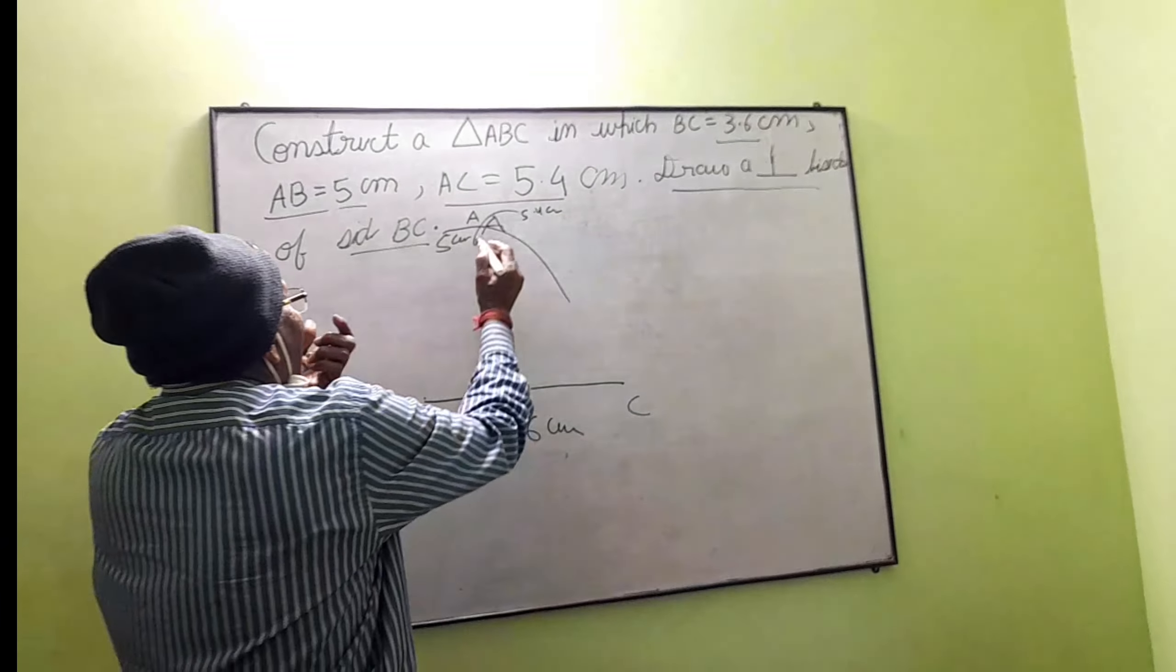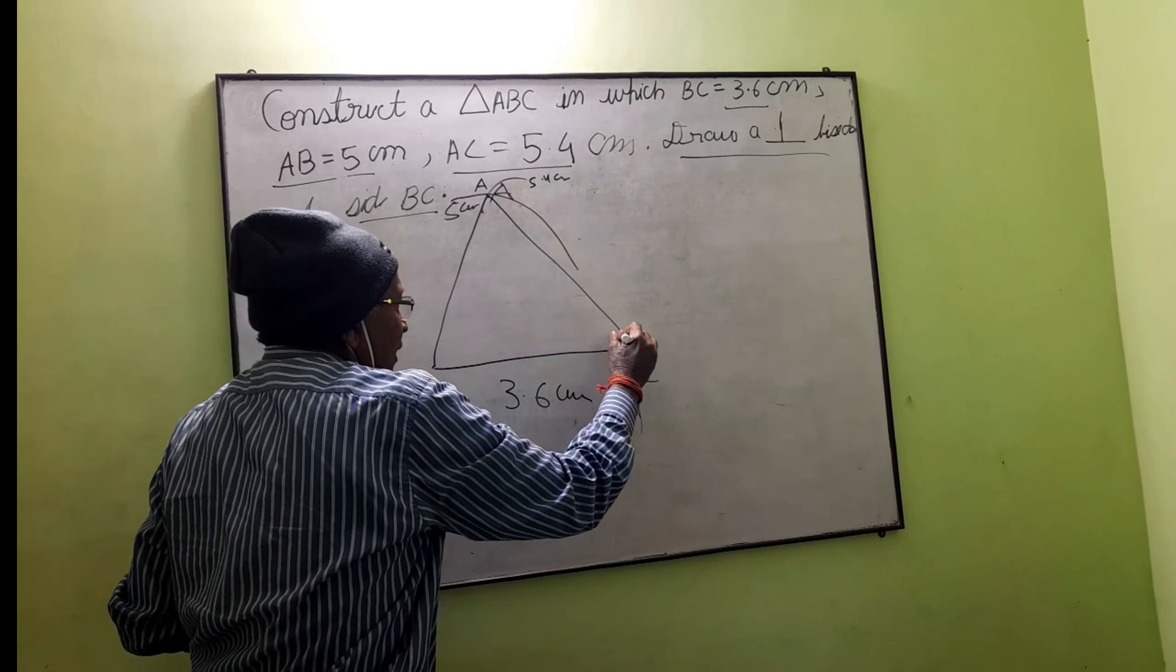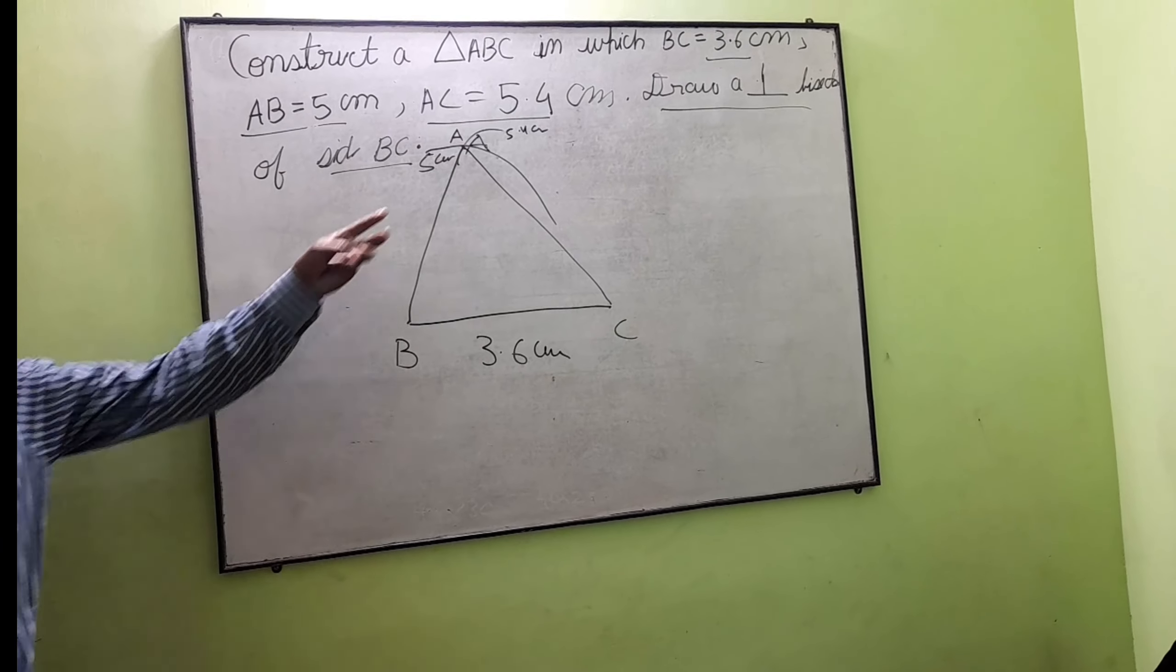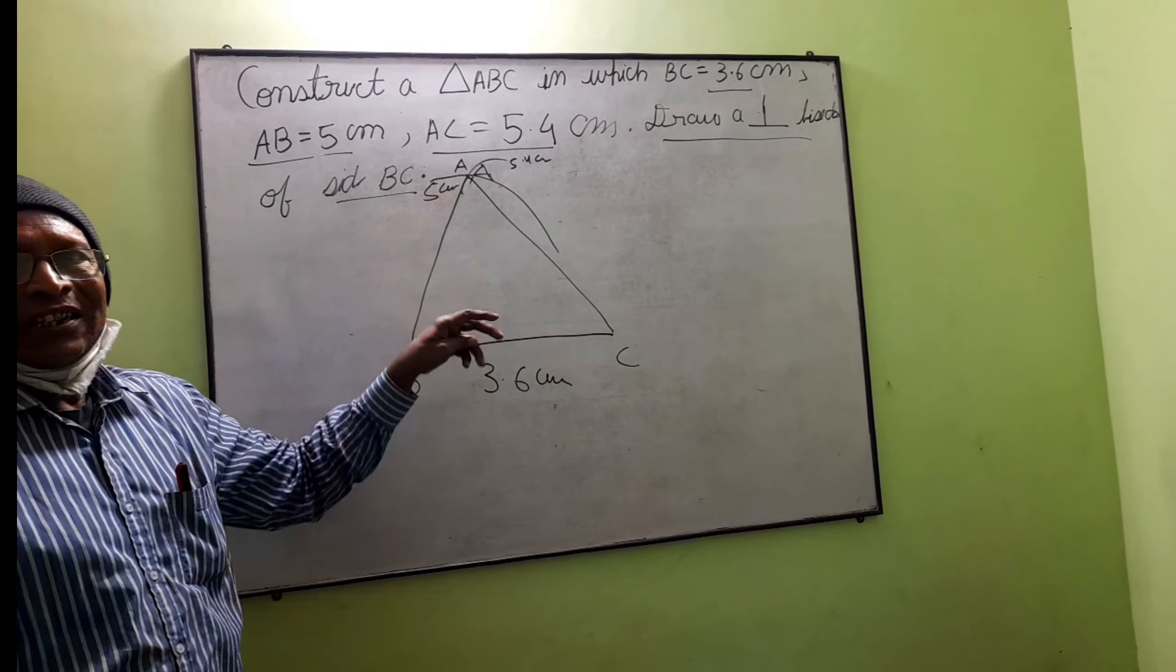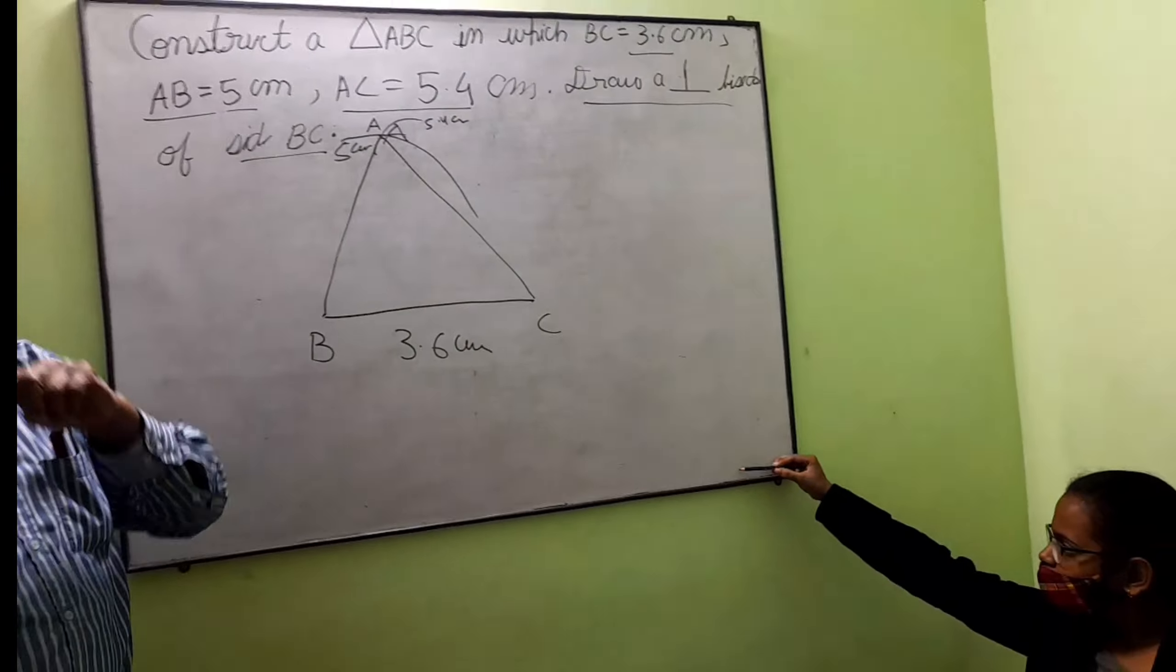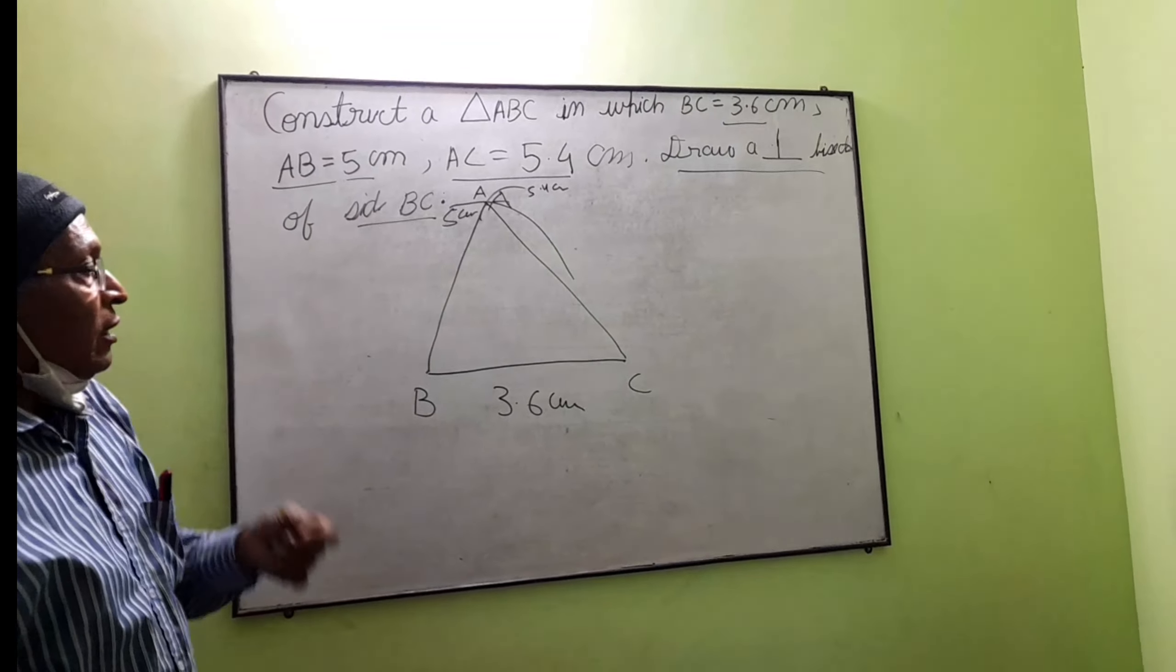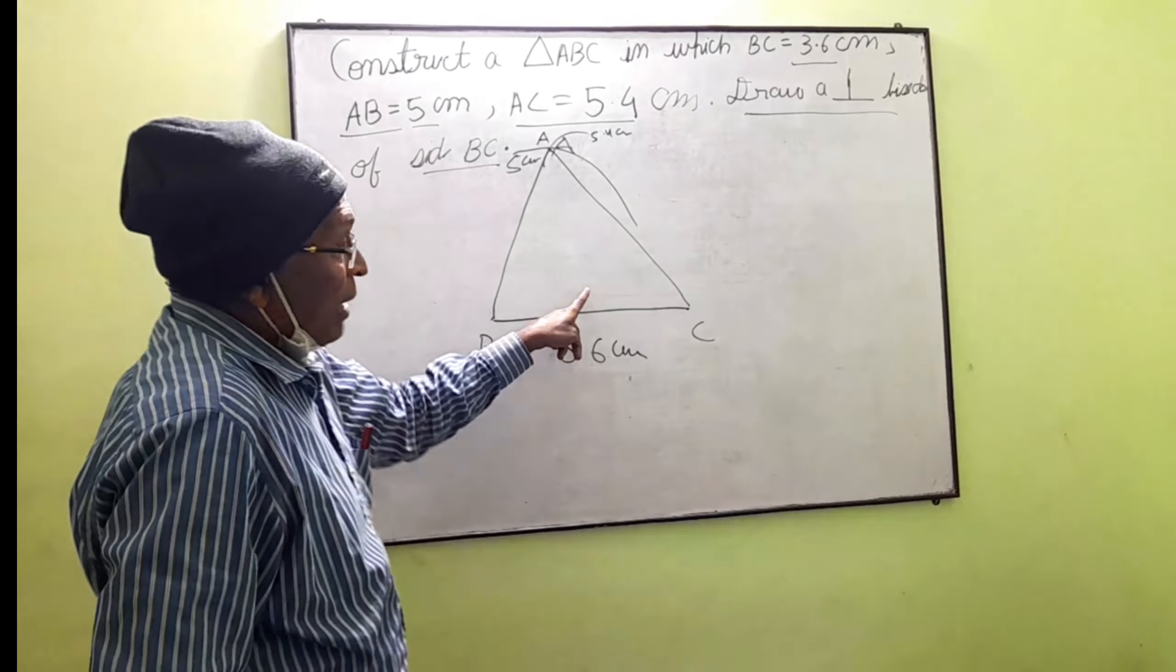You join AB and AC. Now the next step is you have to draw the perpendicular bisector of BC.